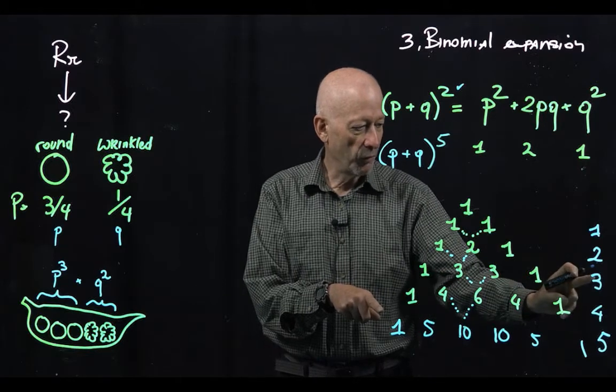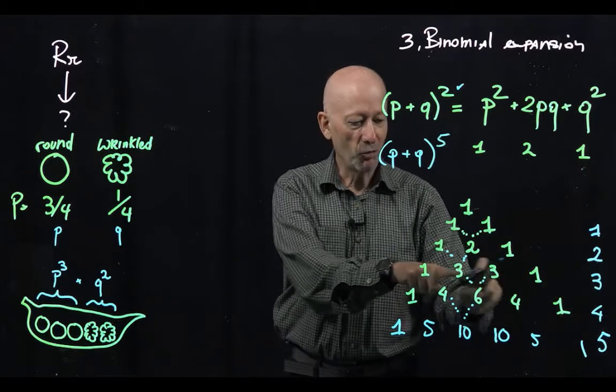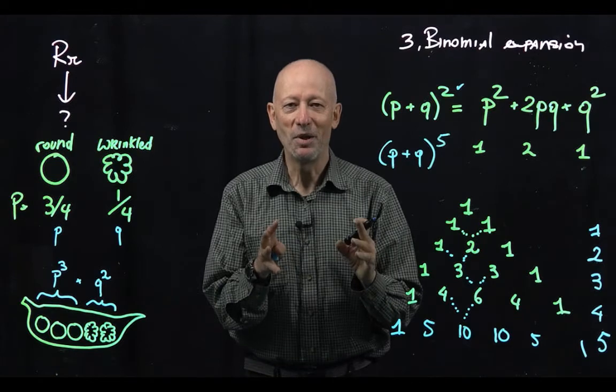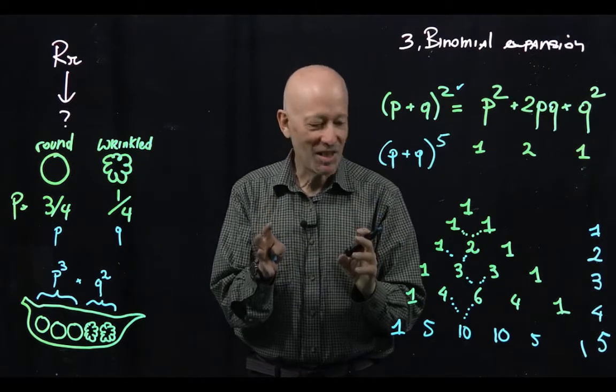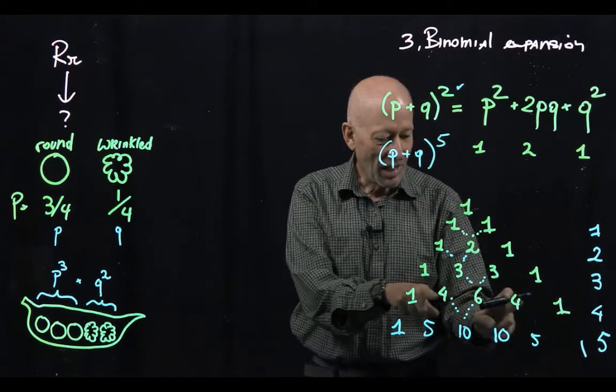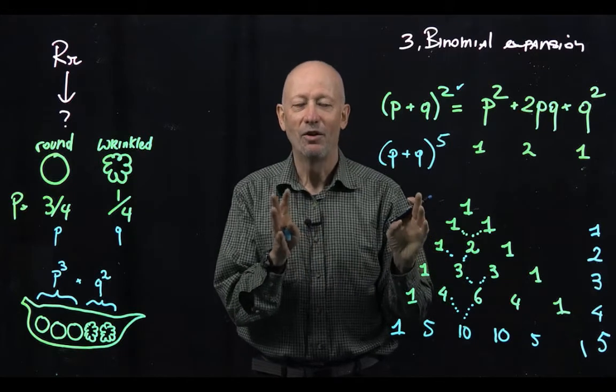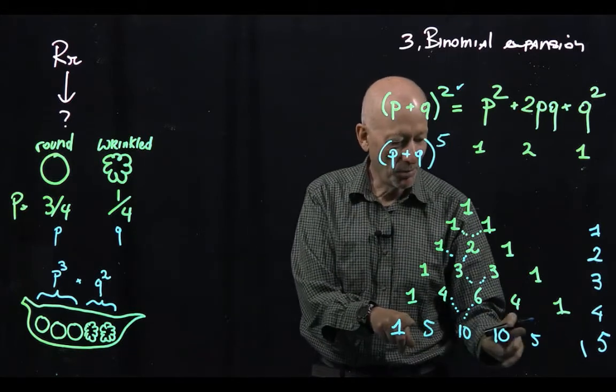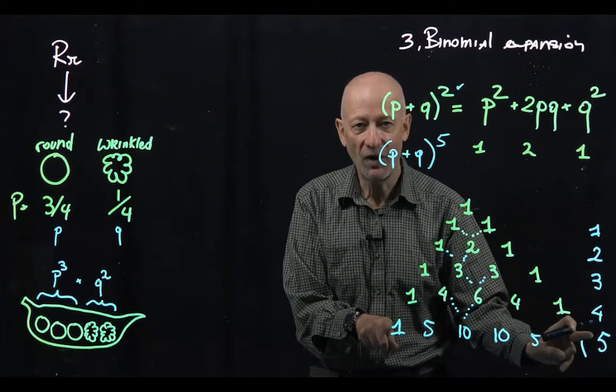This is for the exponent of 3. So this would be used to calculate the probability of pods that have 3 seeds. Here is a way to calculate the probability of pods that have 4 seeds. And now here's the probability of pods that have 5 seeds.